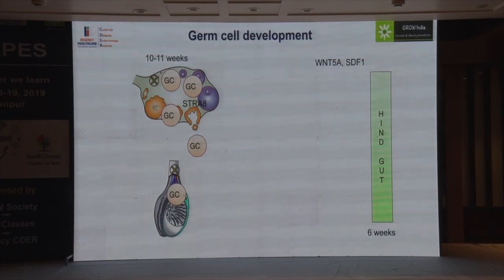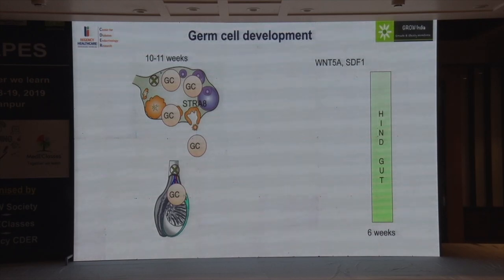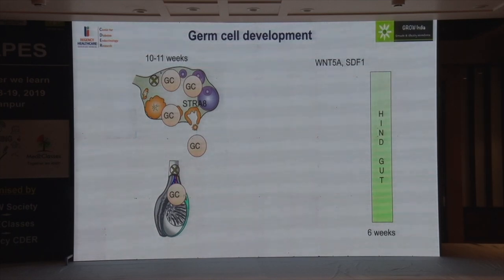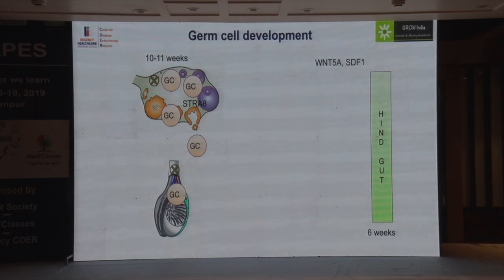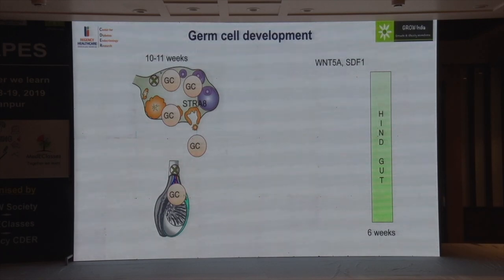XY DSD is largely an act of omission — if work is not happening, if you have no gonad, no testis, no testosterone, no dihydrotestosterone, no androgen receptor, you will have XY DSD. But if you have no gonad, no ovary, no estrogen, no aromatase, no estrogen receptor, you will still develop as a girl. So XX DSD is an act of commission. This is a very basic difference — act of omission versus commission — which helps you distinguish between the two.